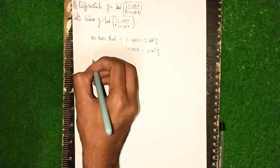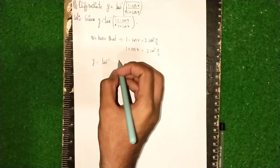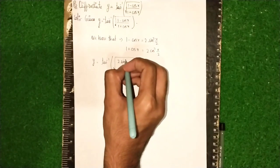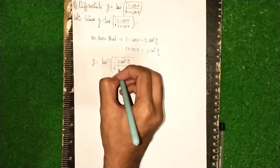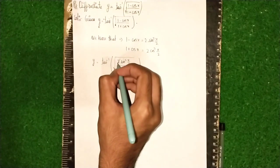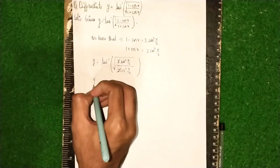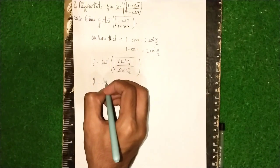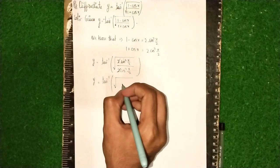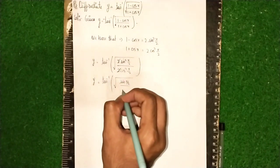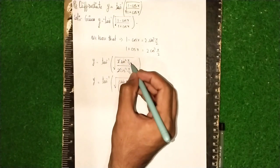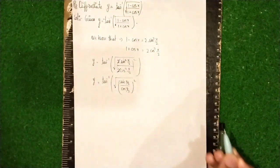So it becomes y is equal to tan inverse of under root of 2 sin square x by 2 divided by 2 cos square x by 2. The 2s cancel out. Now we have sin square x by 2 by cos square x by 2, and we can take the square common outside the bracket. The square and the root get cancelled.